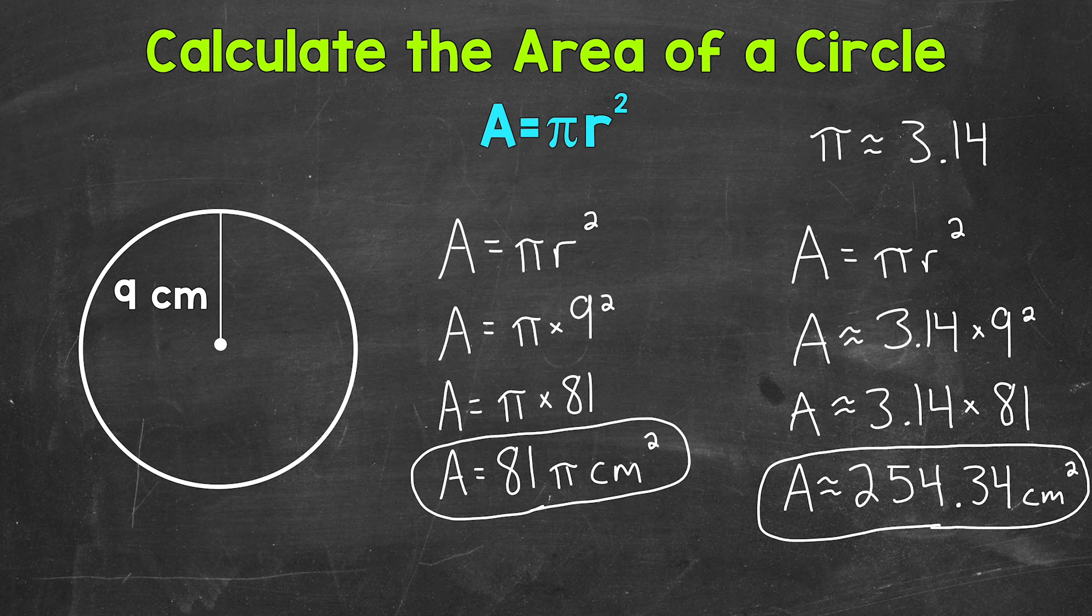So there you have it. There's how you calculate the area of a circle. Use the formula area equals pi r squared. And then we have different options as far as how we write that area. We can write it in terms of pi, or we can use an approximate version of pi to get an approximate area in decimal form.